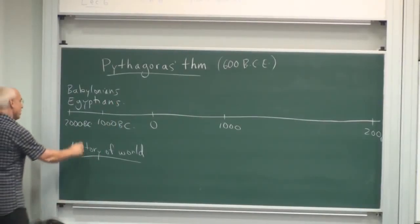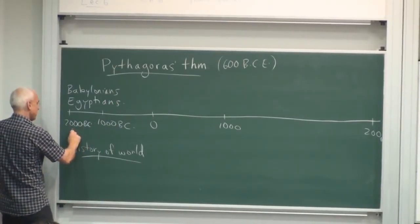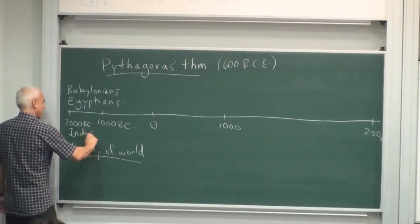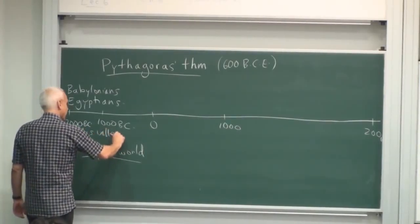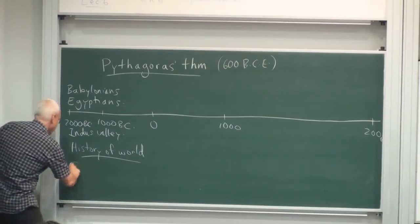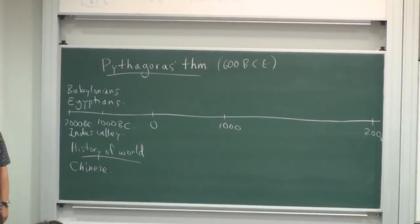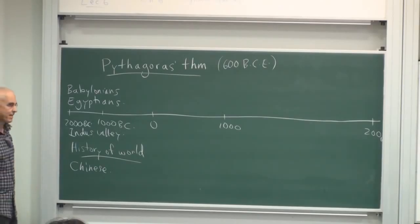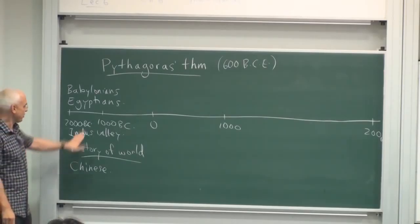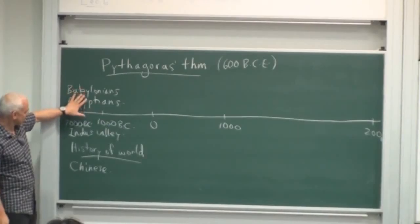And in the east, we had Indus Valley, Indians, and Chinese early empires also. The Greeks don't really... So this is around 2000 BC. So let's just start with these.